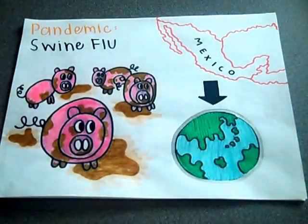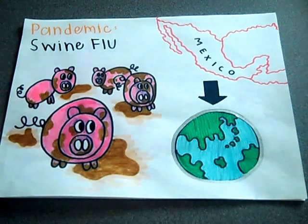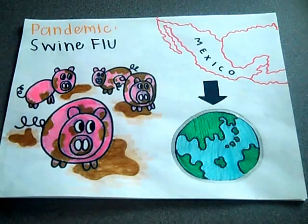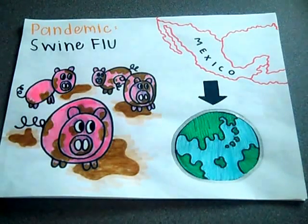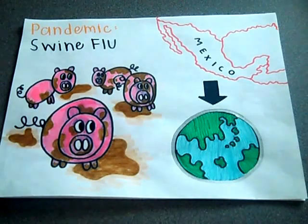A pandemic example could be the swine flu in 2009. It started in Mexico, and the virus went global after the Mexican government failed to contain it. There were about 284,500 deaths and many more infections. The swine flu started in April 2009 and ended August 2010.